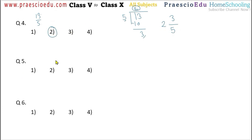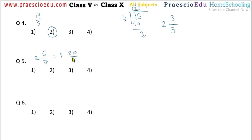Question number 5: 2 and 6 by 7 equals how much? This is a mixed fraction and all the options are in improper fraction form, so we convert it. 7 multiplied by 2 is 14, and 14 plus 6 is 20. The denominator stays the same, so the answer is 20 by 7, which is option number 3.